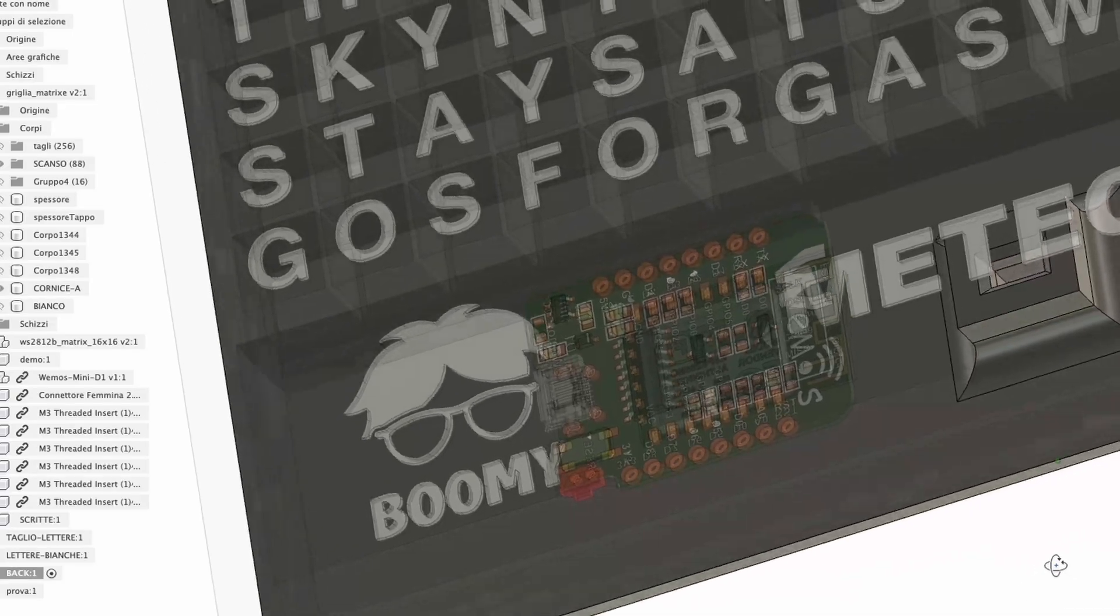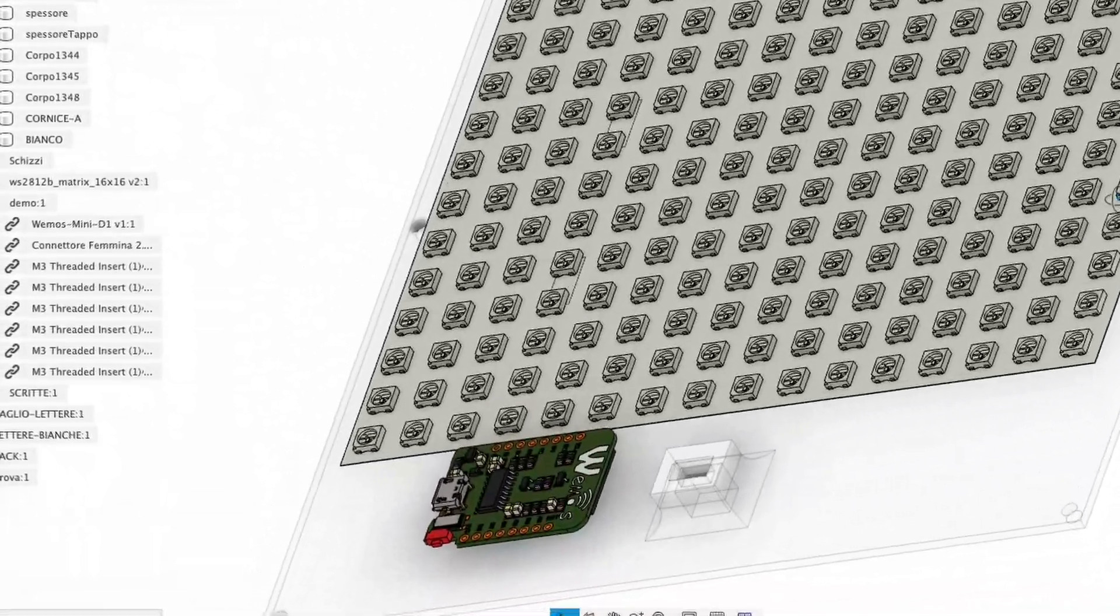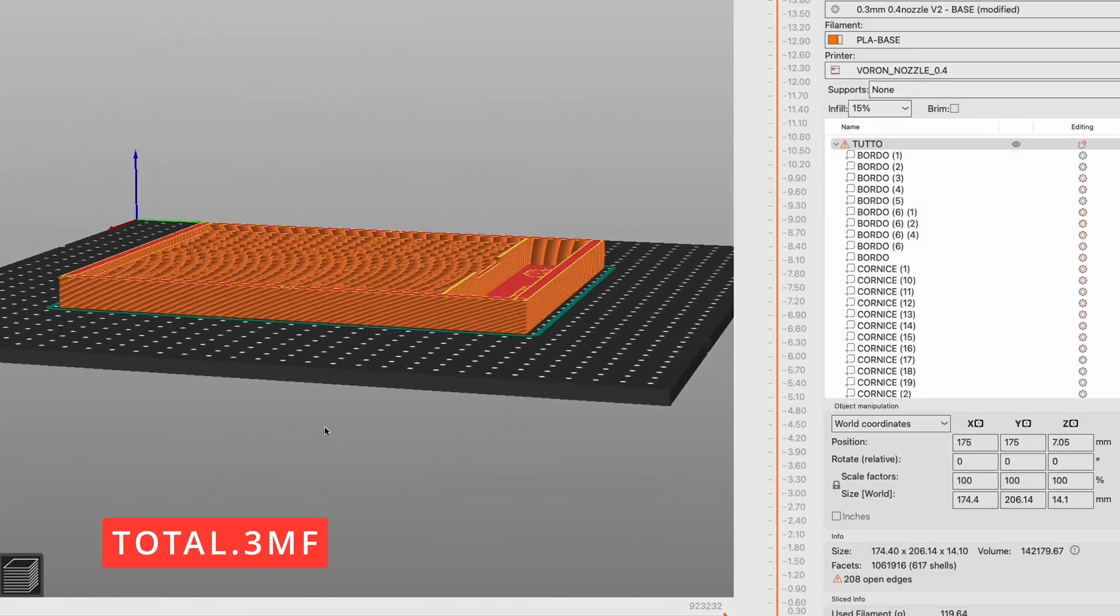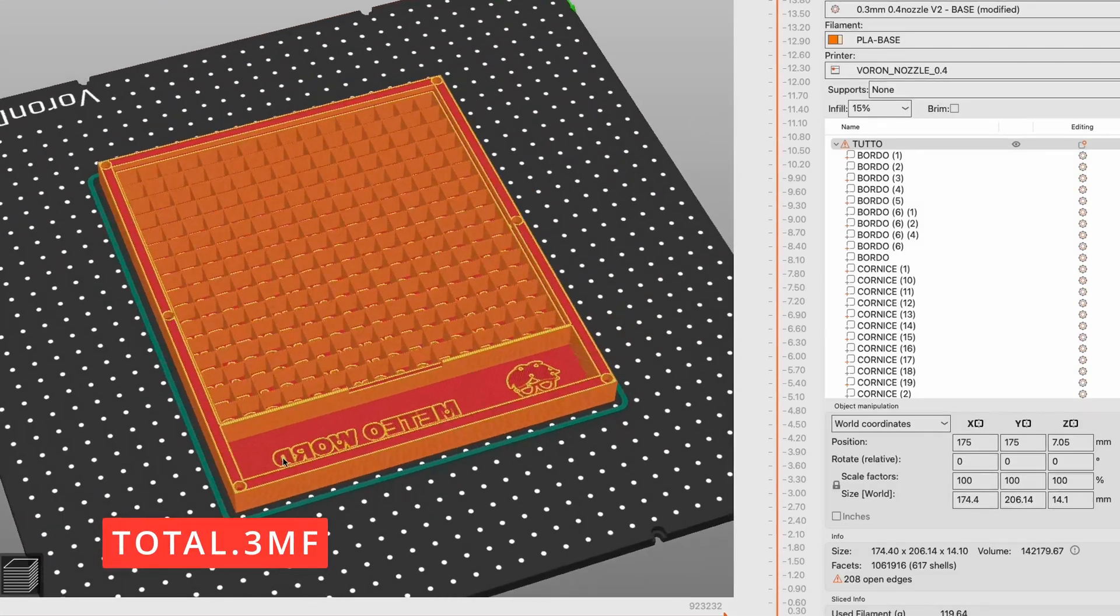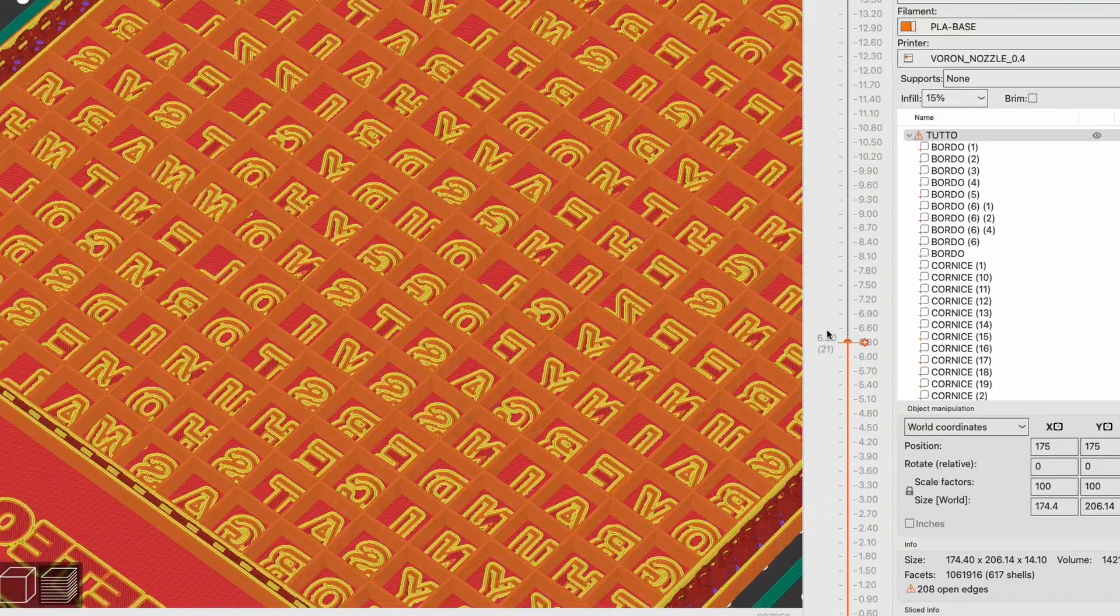I create a space where the ESP8266 microcontroller will be inserted. Then, using Fusion Slicer, I prepare the file for the 3D printer that manages two columns.